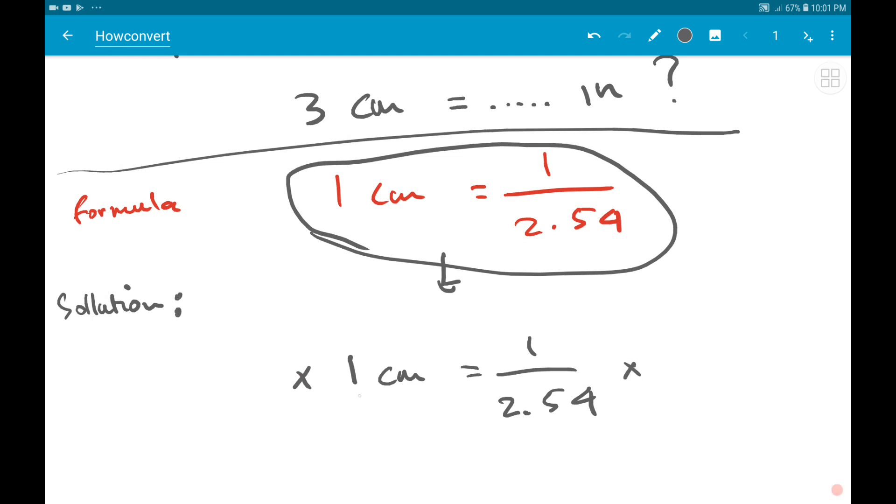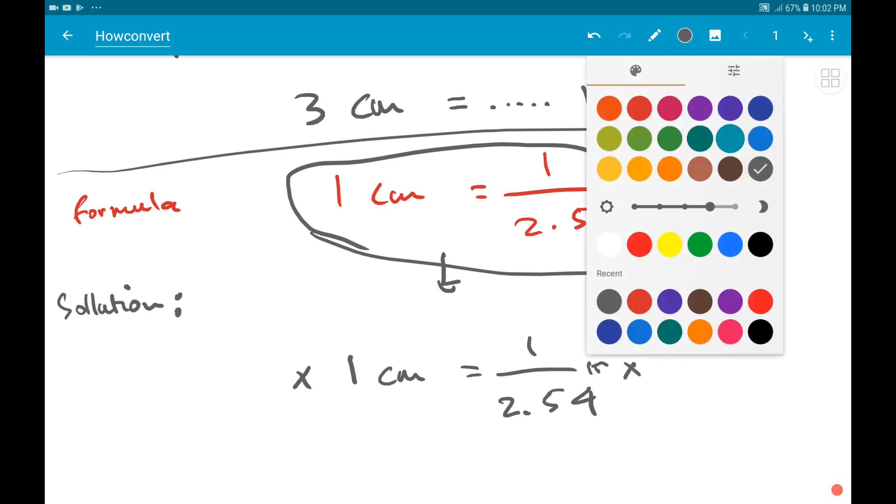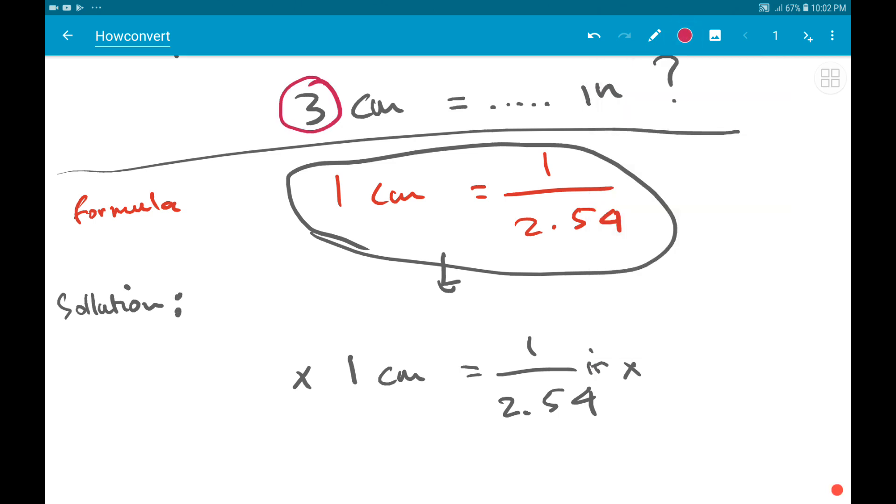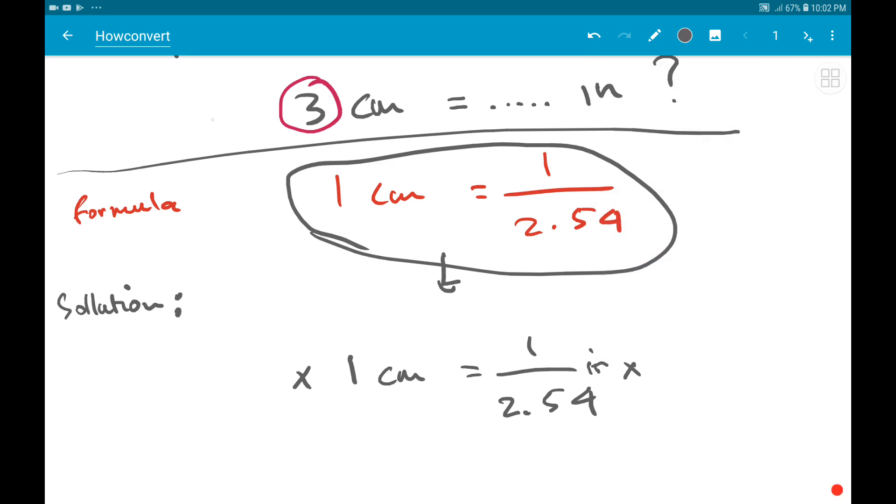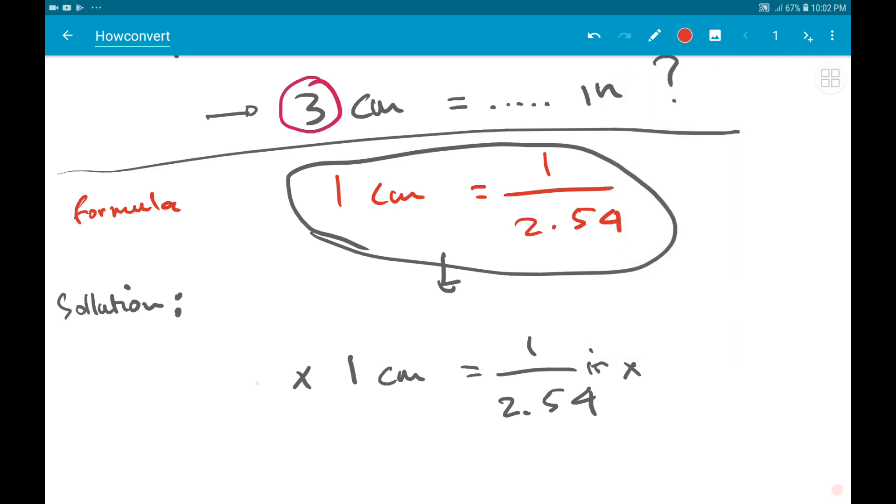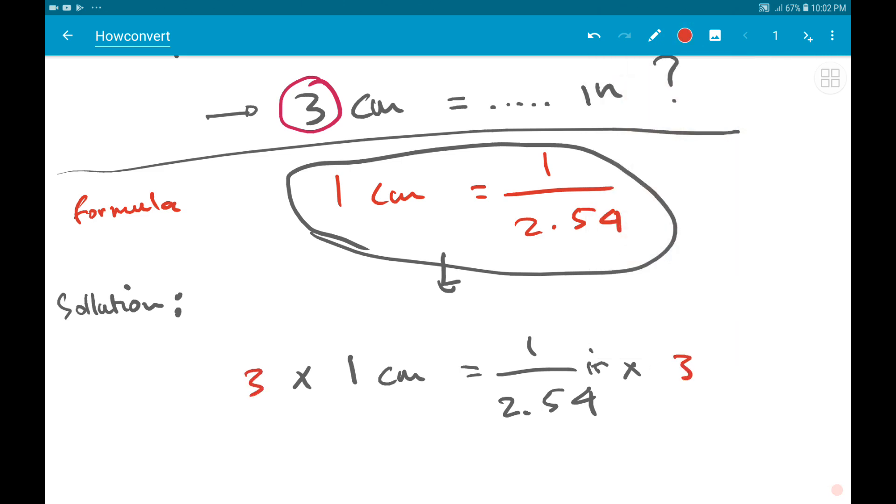We multiply both sides—this 1 cm and this 1/2.54 inches—with the number 3, because that's the only number we have from the question. So we'll put 3 here and here. Three times one equals 3 centimeters.